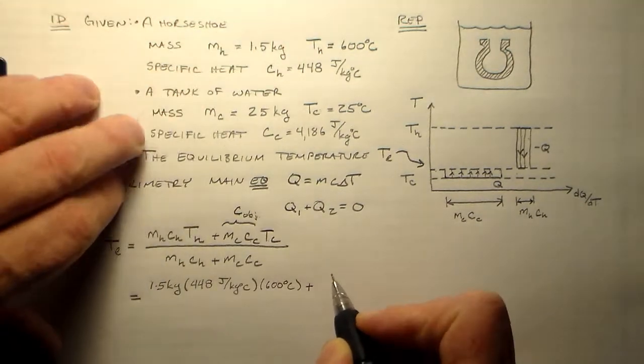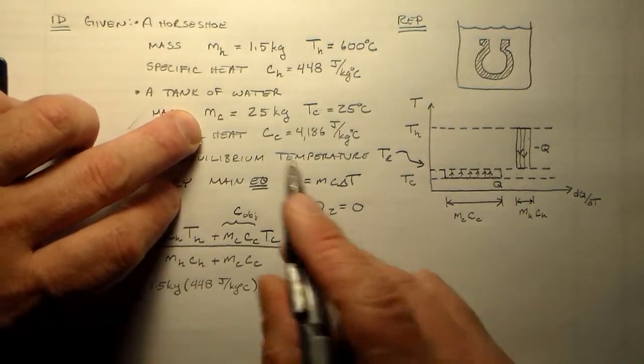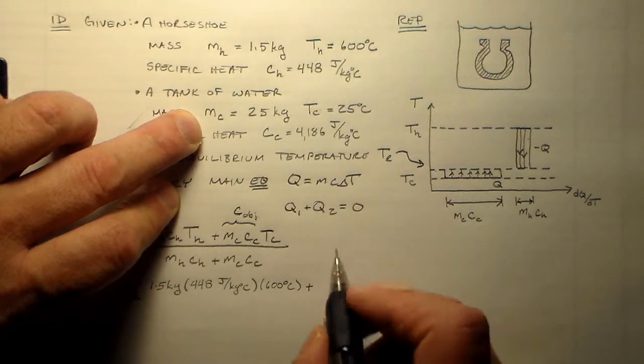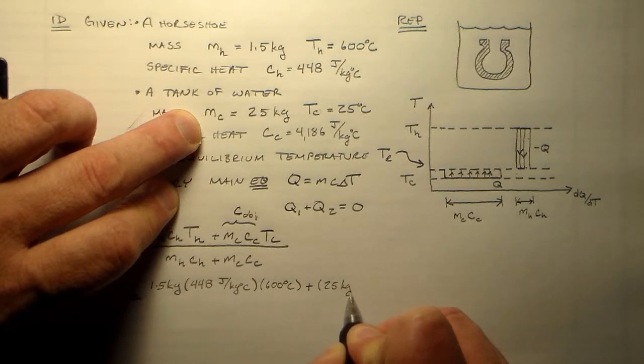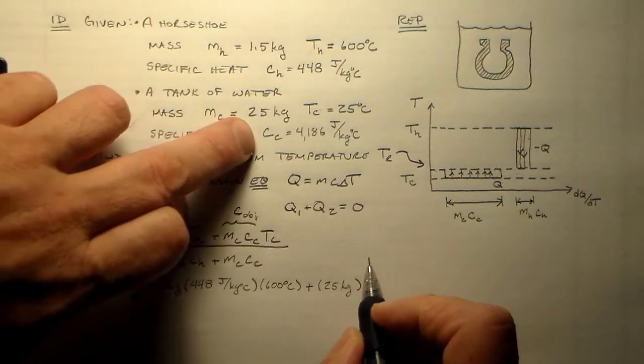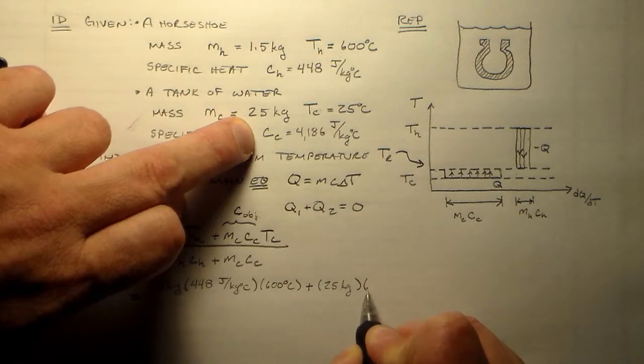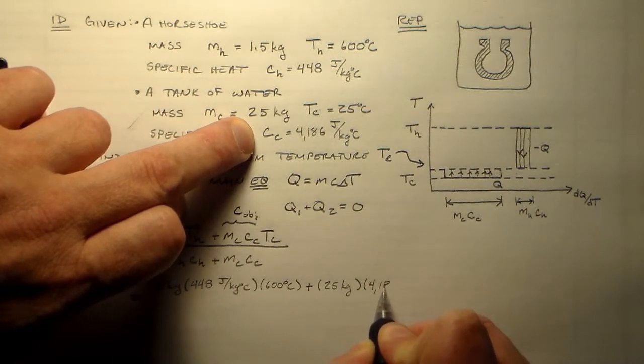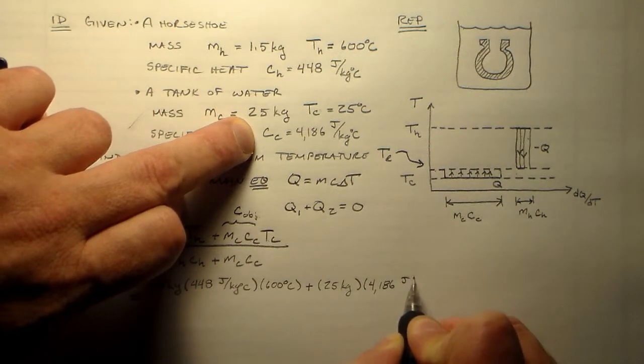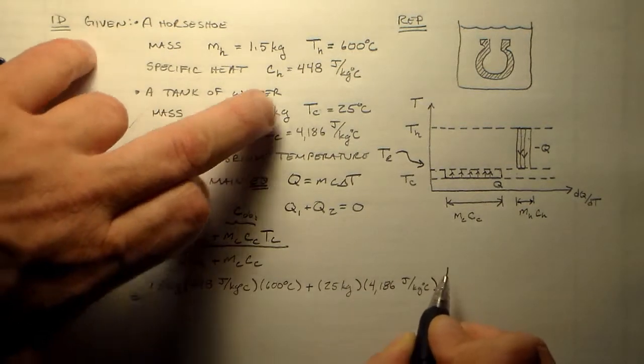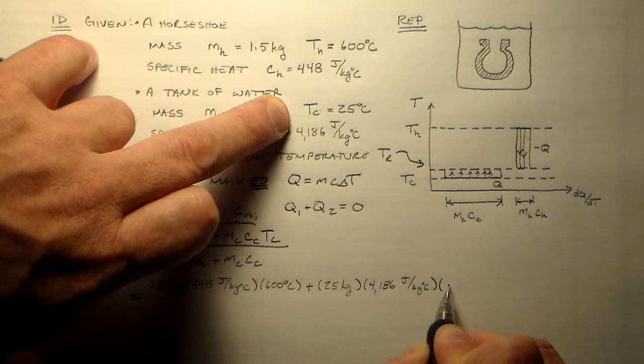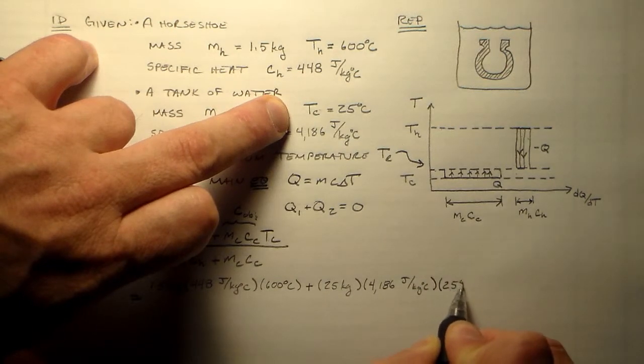The temperature, the initial temperature of the horseshoe is 600 degrees C. And we add in the mass of the water. We have 25 kilograms of the water. We multiply that by the specific heat of the water, which is 4,186 joules per kilogram degree centigrade. And then the initial temperature of the water, which is 25 degrees C.